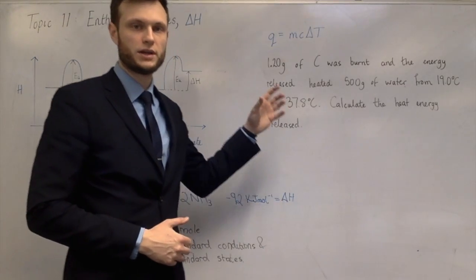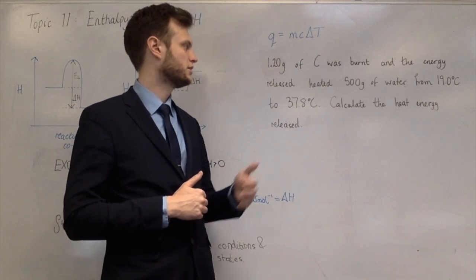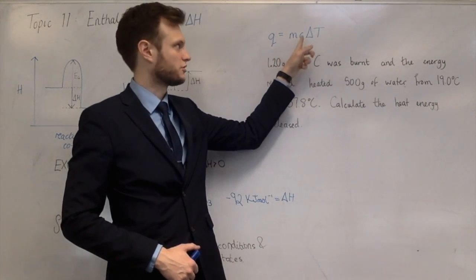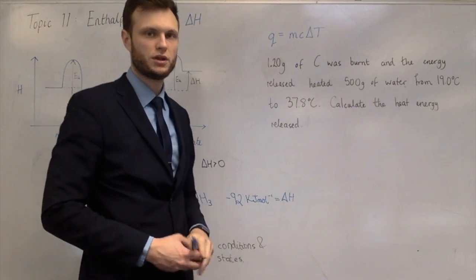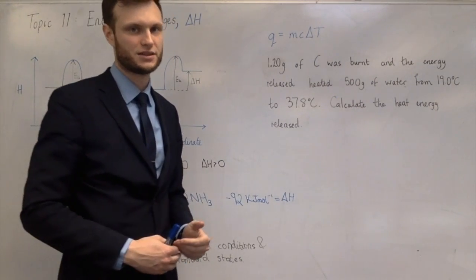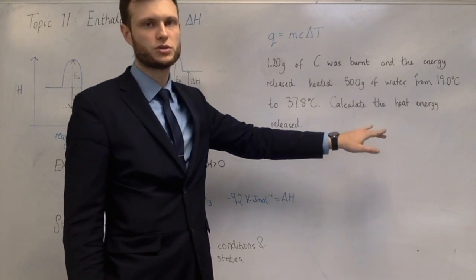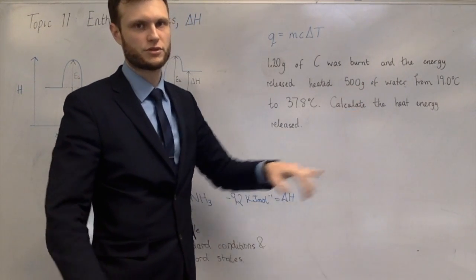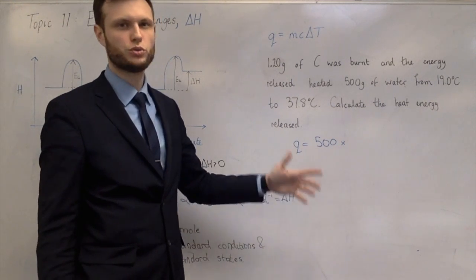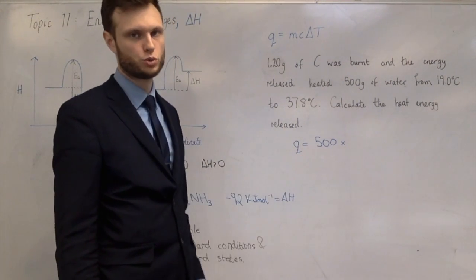A typical question: 1.20 grams of carbon was burnt and the energy released heated 500 grams of water from 19 to 37.8 degrees Celsius. Calculate the heat energy released. Q = mcΔT. The mass is 500 grams — the mass of the water, not 1.2 grams. This could equally have been stated as 500 mL or 500 cm³ of water, all giving 500 grams because the density of water is 1 gram per cm³.